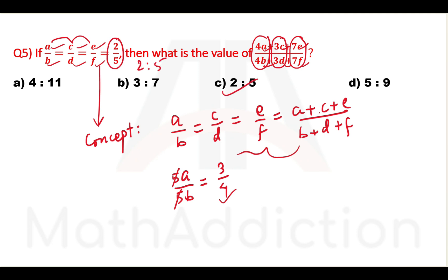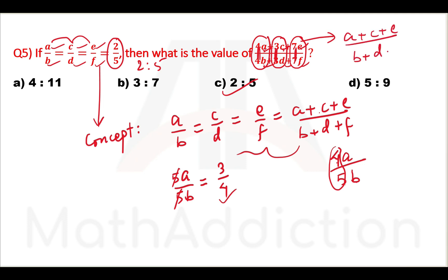The answer is: we have 4a and 5b. Given a is to b as c is to d as e is to f equals 2 by 5, we take the same ratio. We have a/b = c/d = 2/5, and e/f = 7/7. You can see the value: a + c + e over b + d + f gives the same ratio. Using the value, we get 2 by 5 — same number. So direct answer.